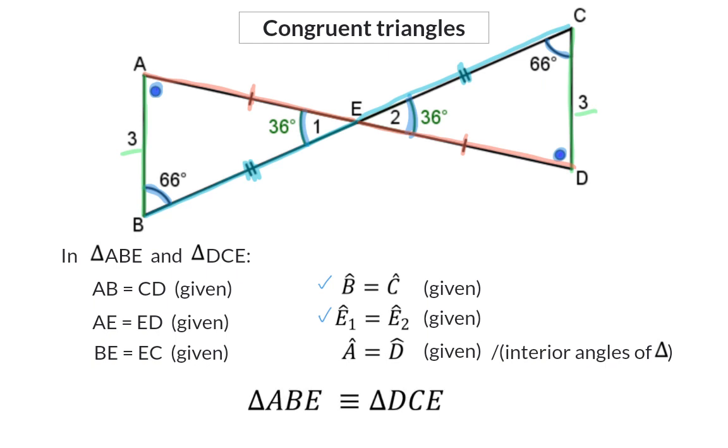When we now state that these two triangles are congruent, it is important to ensure that the corresponding angles are written in the corresponding spots. Angle A, which I wrote first, in this case is equal to angle D, which then also has to be written first. Next, on the left, I wrote angle B, which in this case is equal to angle C, and that is why C has to also be written second. Then I chose to write E on the left last, and E1 is equal to E2, and therefore E should be the last letter on both sides.